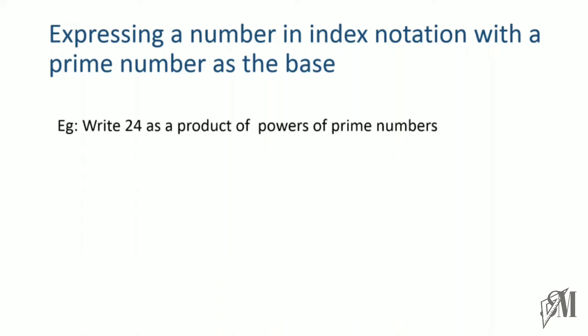Write 24 as a product of powers of prime numbers. You should remember what prime numbers are. The basic prime numbers include 2, 3, 5, 7 etc. So always you have to divide the given number with the help of prime numbers.